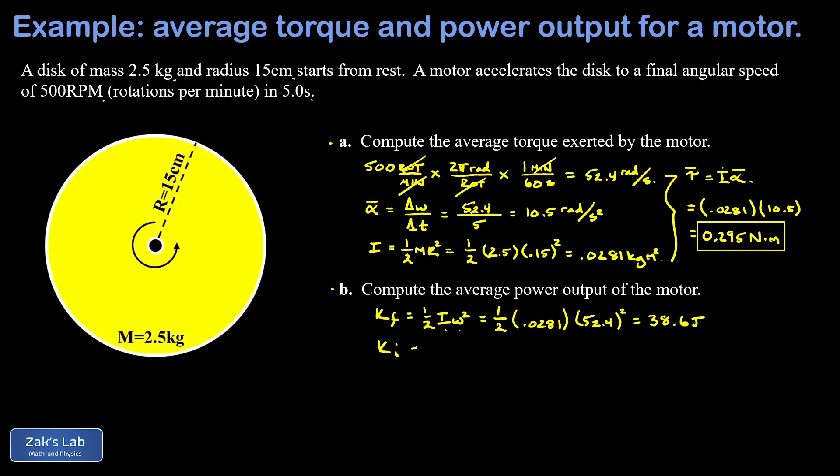Now the initial kinetic energy was zero because the disc started from rest, and so our average power output is just the total energy that ended up in the disc divided by how long it took to get there. So we could call that a change in energy divided by change in time; sometimes that's written as work divided by time.